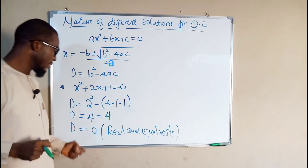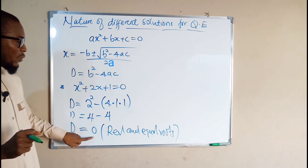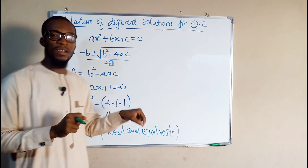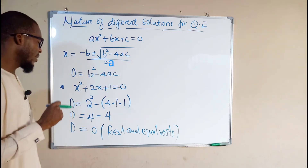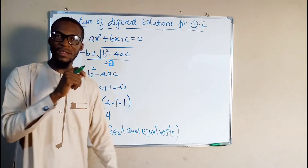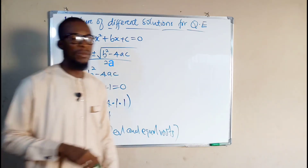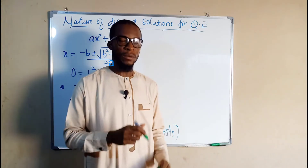Another thing: if d is equal to 0, we say that that quadratic equation is a perfect square quadratic equation. That is another point you can note from this.